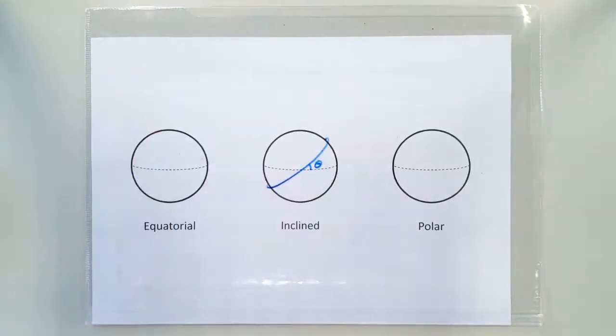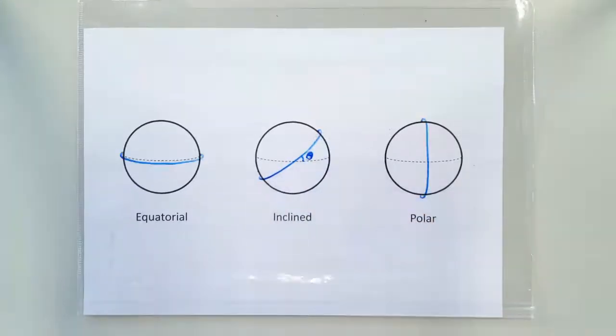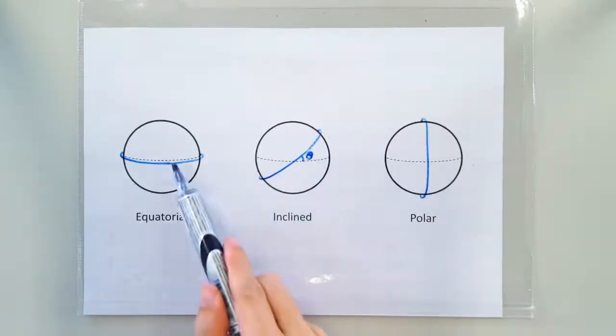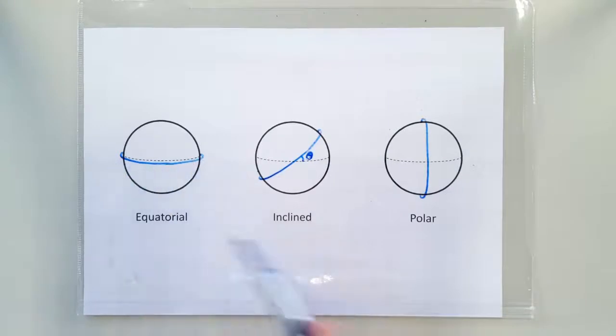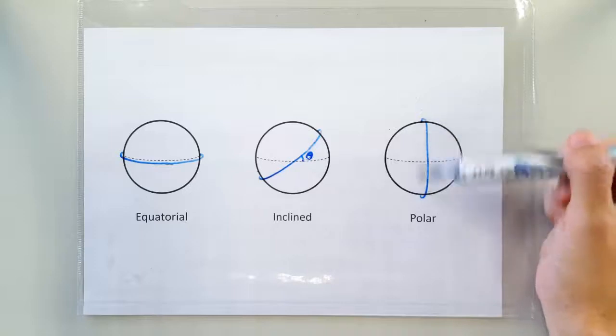There are two things we can choose for our orbit. One is the orbit altitude and the other is the angle of inclination. If your angle of inclination is zero, then you have an equatorial orbit. If your angle of inclination is 90 degrees, then what you have is a polar orbit.